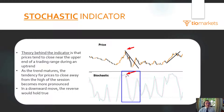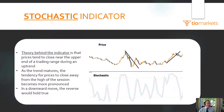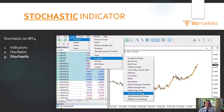As the trend matures, the tendency for prices to close away from the high of the session becomes more pronounced. In a downward move, the opposite holds true. So let's get into this — it's probably still not entirely clear to somebody new to the stochastic oscillator, but we're going to smooth it out. The stochastic indicator can be found on MT4 under Indicators > Oscillators, because it is an oscillator, not a trend follower.